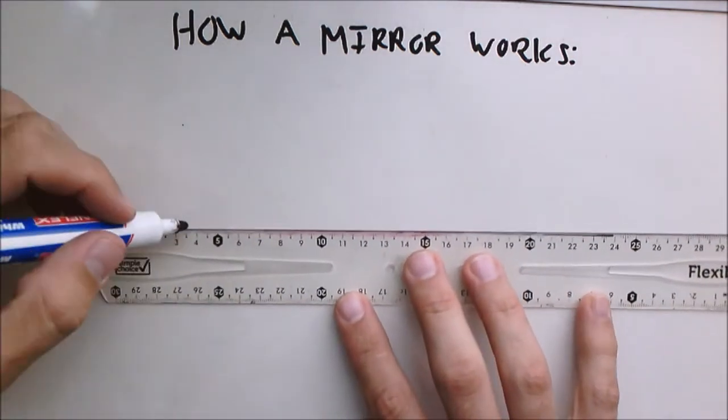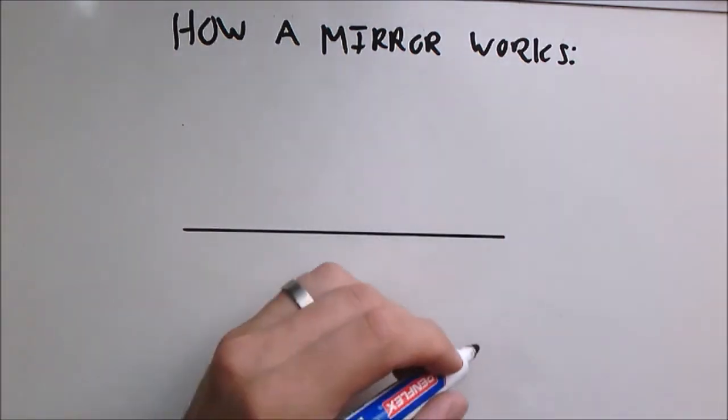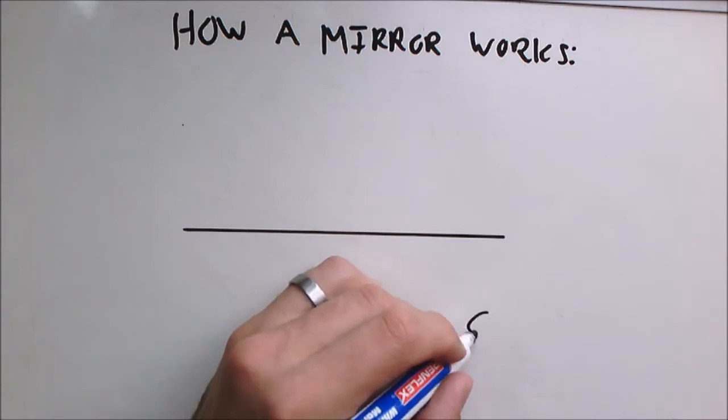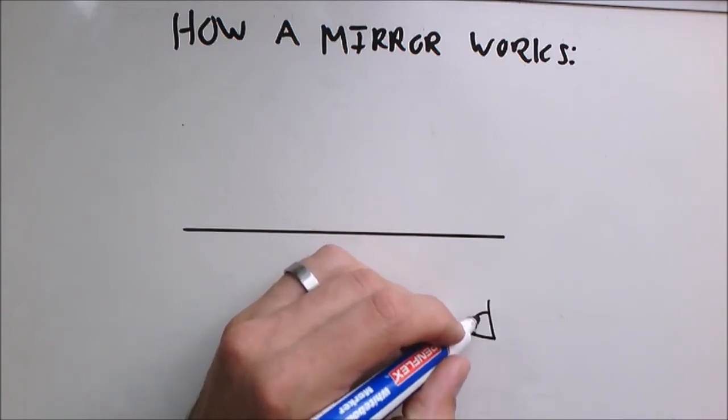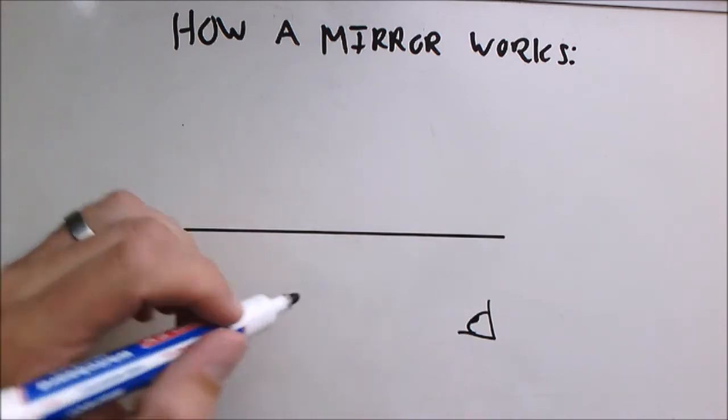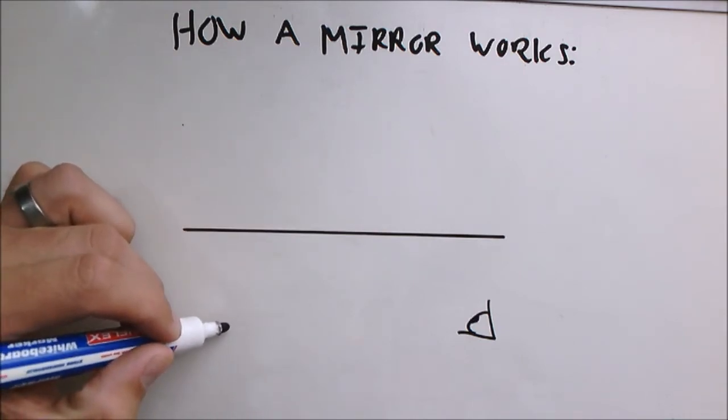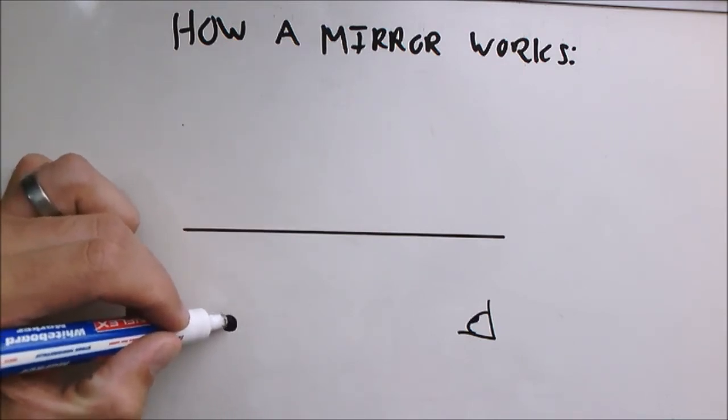So here you have a mirror, and this is your eye. Now you are looking at the mirror at an object that is over here. So let's say that is the object.